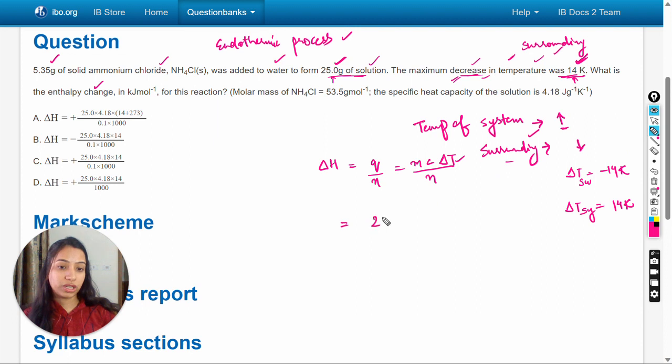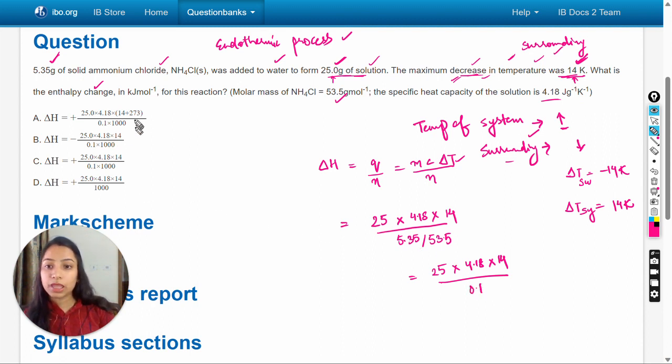25 multiply c, that is specific heat 4.18, multiply 14, divide by number of moles. Number of moles will be the mass divide by molar mass, that is 5.35 divide by 53.5. So here number of moles will be 0.1 into 14 divide by 0.1.